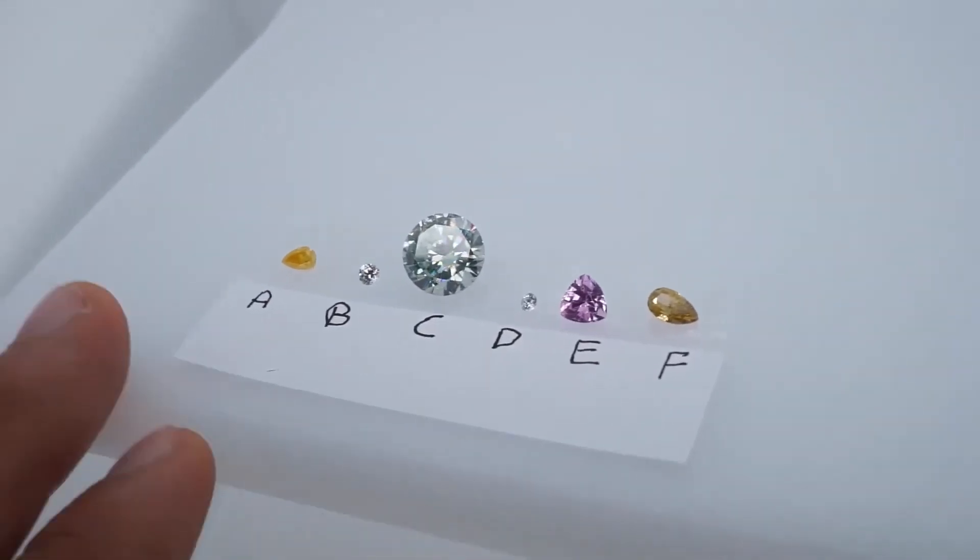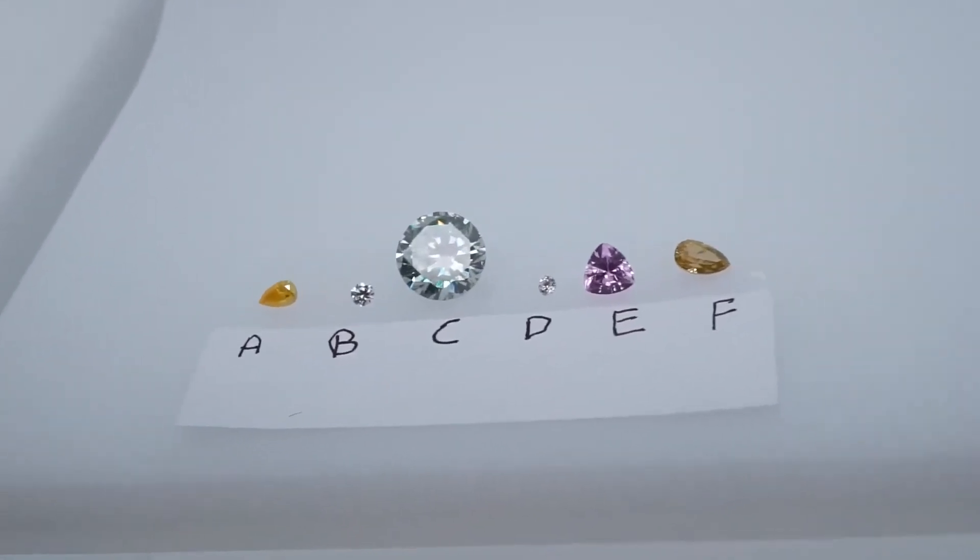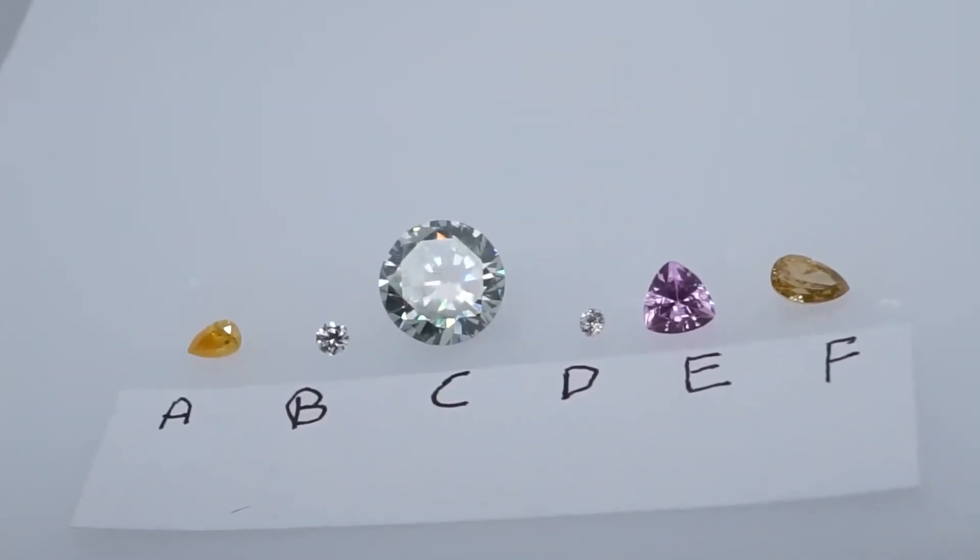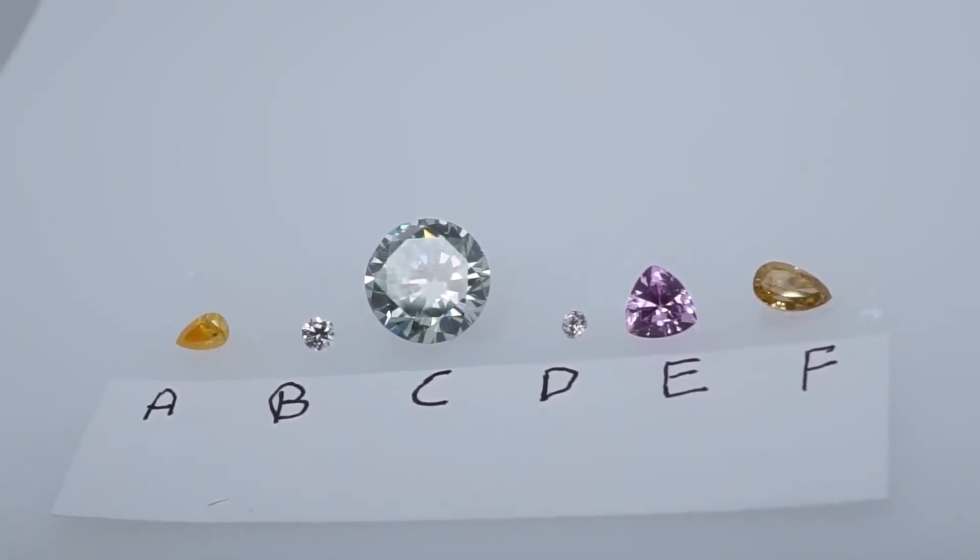If you want to get more refined with it, you can buy Mohs calibrated Mohs test kits that have tips that are one through 10 Mohs hardness. And what that will do is allow you to test exactly the hardness and maybe identify the specific simulant or alternatively, maybe it might be a colorless Sapphire or colorless Spinel. And that would help you in identifying that.